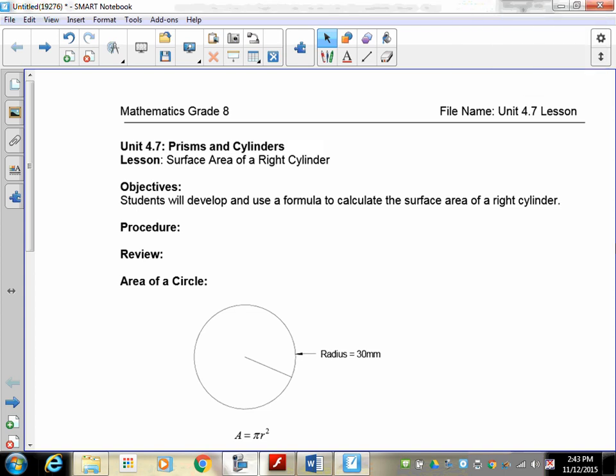Welcome to lesson 4.7. Now, we're going to move away from the prisms and we're going to move into the area of cylinders. In this first lesson, we're going to get you to develop a formula to calculate the surface area of a right cylinder.